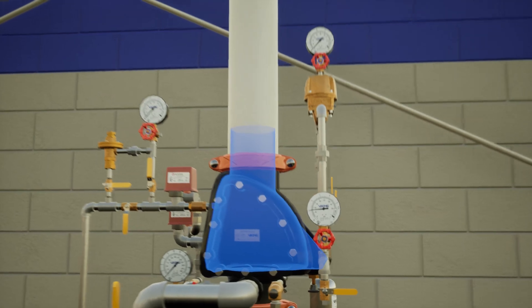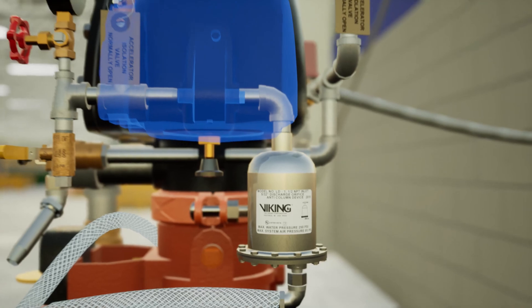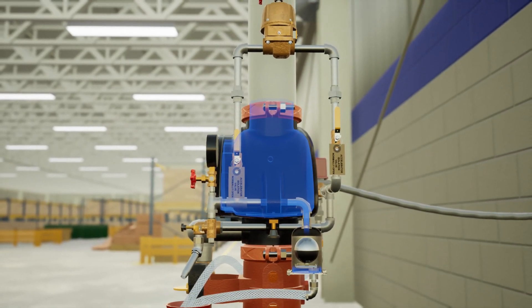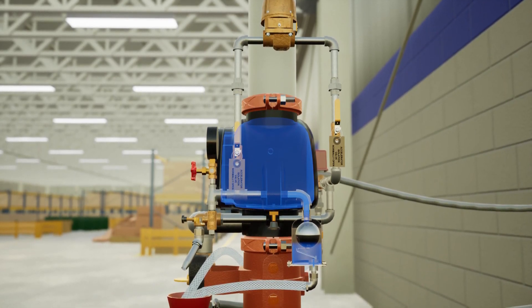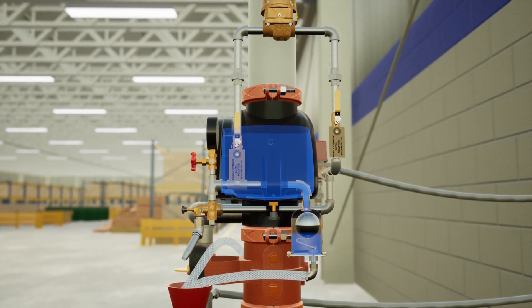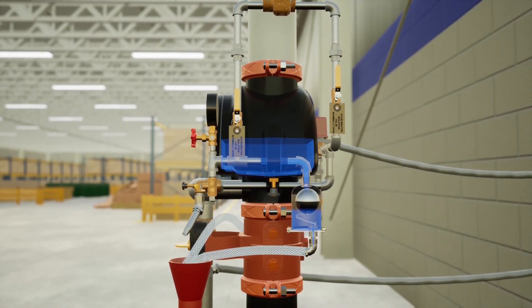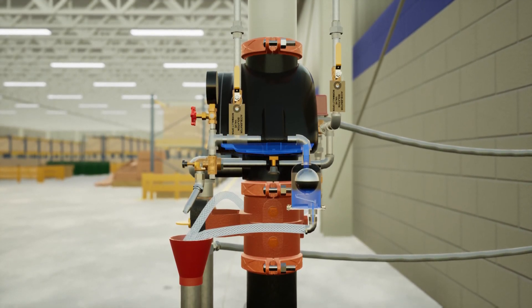However, an anti-column device will prevent this from occurring. The hollow steel ball inside of the anti-column device acts as both a weight and a buoy. If water is present, it will float to the top, allowing water to drain out the bottom. Otherwise, it will return to its resting position, resealing the chamber.